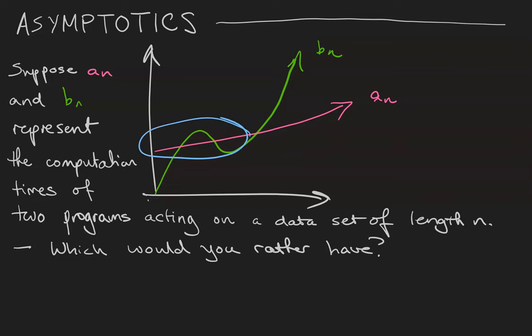For a while it seems like aN is the worst choice, but after a point it's pretty clear that bN overtakes aN and continues being much larger than aN. In other words, bN scales worse with the data, so I think we'd rather have aN if these are the two computation times.